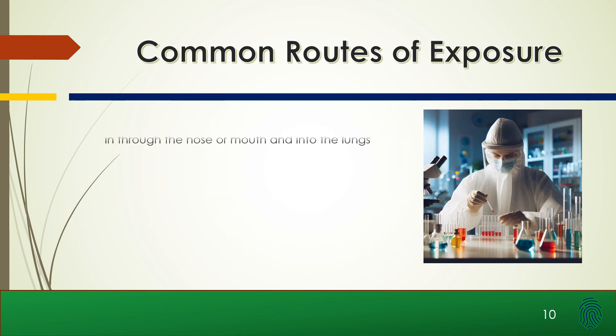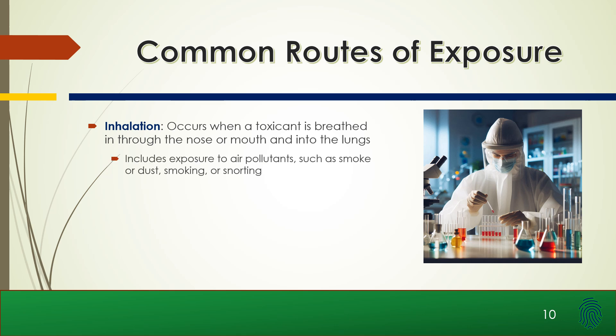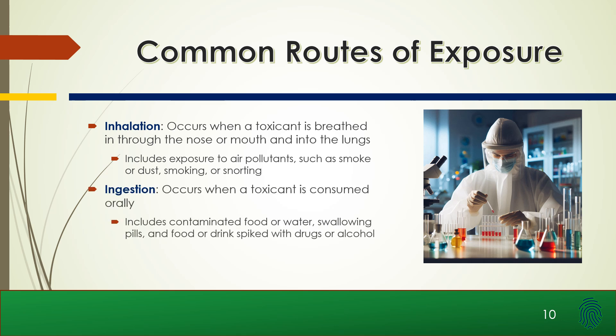Some common routes of exposure for toxins. Inhalation occurs when a toxin is breathed in through the nose or mouth and into the lungs — this includes exposure to air pollutants such as smoke or dust, and smoking or snorting. Ingestion occurs when a toxin is consumed orally, including contaminated water, swallowing of pills, or food or drinks mixed with drugs or alcohol.